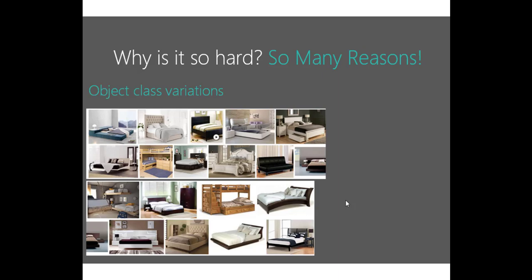There is another reason: object class variations. Object class variations means these objects belong to the same class or category but have different shapes. For example, these are all beds but in different shapes — these images belong to the category 'beds' but have different shapes.